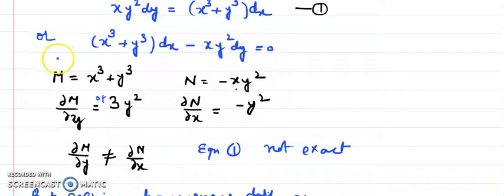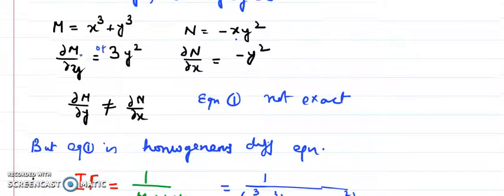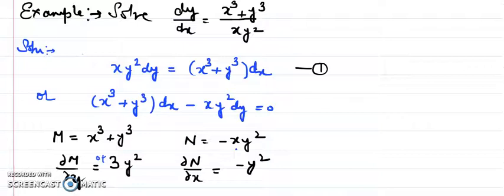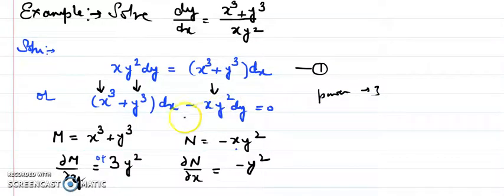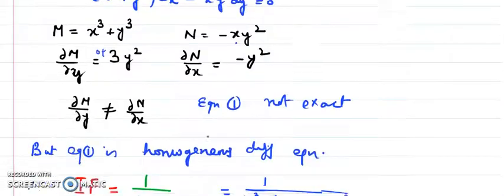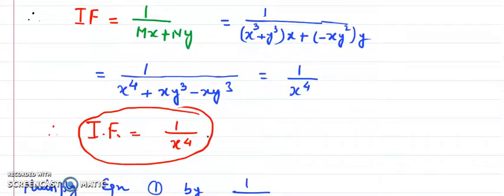Now let's identify the type. To check whether a differential equation is homogeneous, look at all the terms and check if they maintain the same power. Here, x³ has power 3, y³ has power 3, and xy² has power 1+2=3. All terms have power 3, so the given differential equation is homogeneous. We can now apply the integrating factor formula for homogeneous equations.